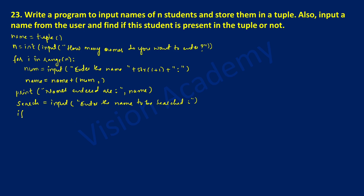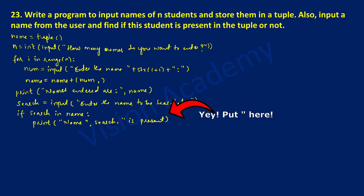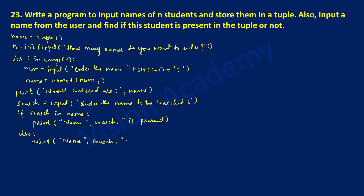Now we are going to use a selective statement called if. I'll write: if search in name, that is, if the search variable is found in the tuple. If this is true then with indentation I'll write print, and in double quotation marks write 'name', then a comma, the variable search, then a comma, and 'is present'. If this is false then the else part must get executed, so else put colon, and with indentation I'll write print 'name', comma, the variable search, comma, 'is not present'.